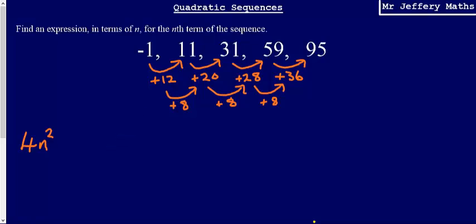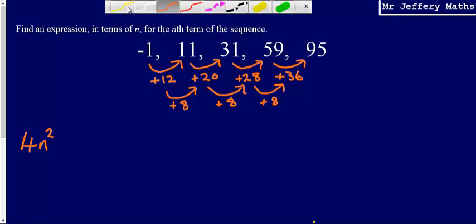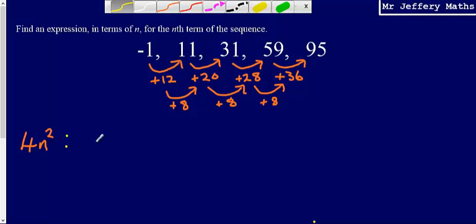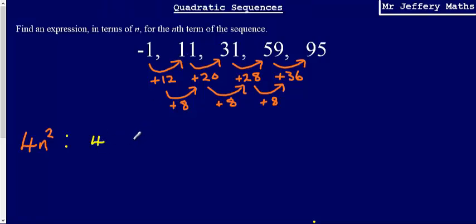The next thing we need to do is write out what the 4n squared sequence would be on its own, because we may have other things to add to 4n squared. So 4 times 1 squared gives us 4 for the first term. Then 4 times 2 squared gives us 16. Then 4 times 3 squared for 36. Then 4 times 16 for 64. And then 4 times 25 for 100.